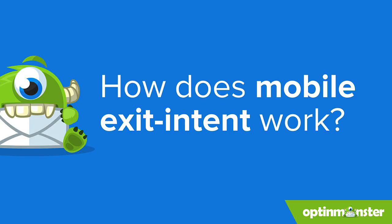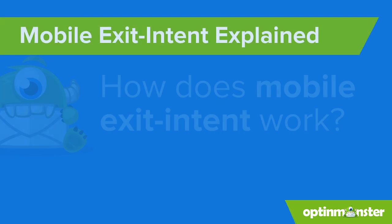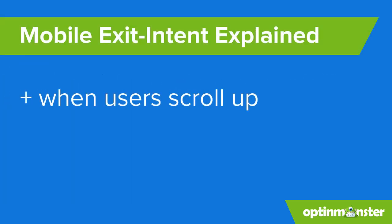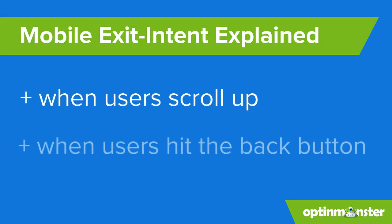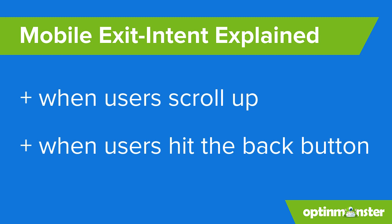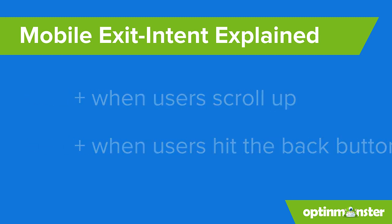Before we get into the tutorial, let's take a look at how these pop-ups work. Our mobile exit intent trigger works in two ways: when users scroll up, and when they hit the back button. We found that these were the two most significant indicators of a user's intent to leave your site.